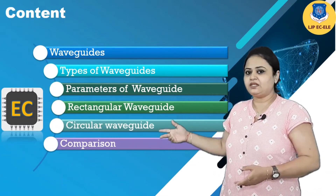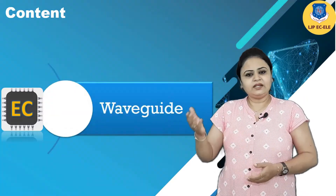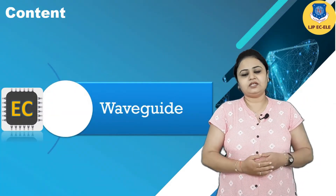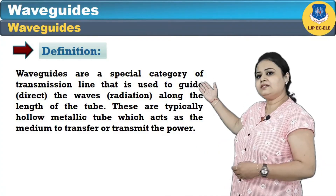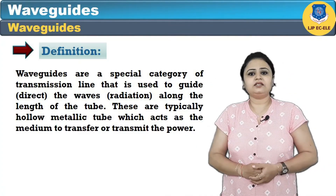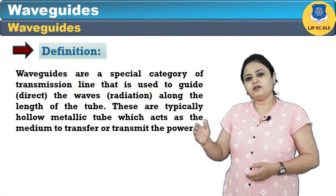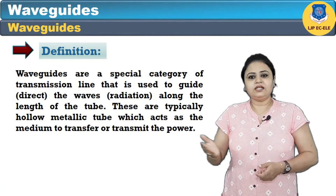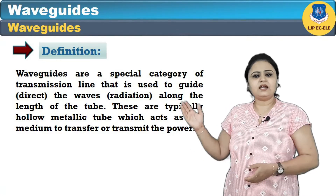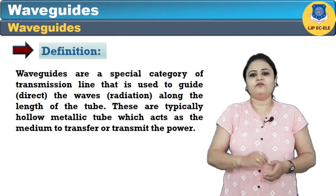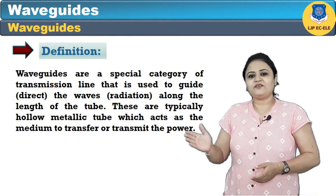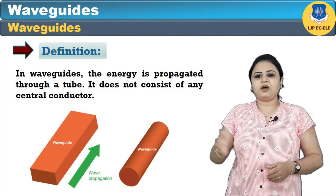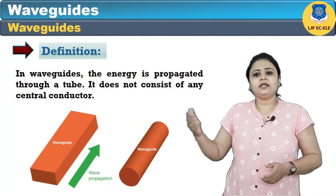Now let us see the definition of waveguide. A waveguide is a special type of transmission line that is used to transmit or guide the wave or radiation along the length of the tube. These are typically hollow metallic tubes which are used as a medium to transfer or transmit power.